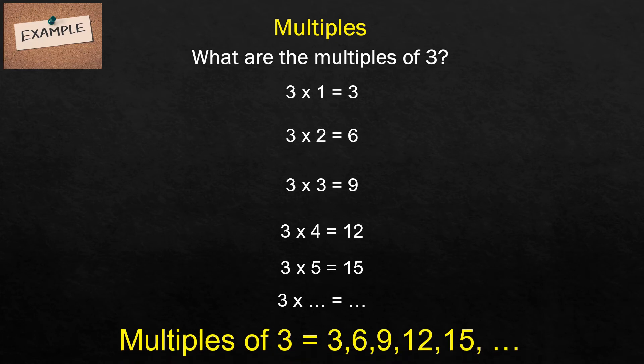So based from the list, the multiples of 3 are 3, 6, 9, 12, 15, so on and so forth.